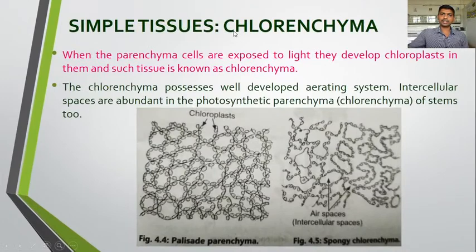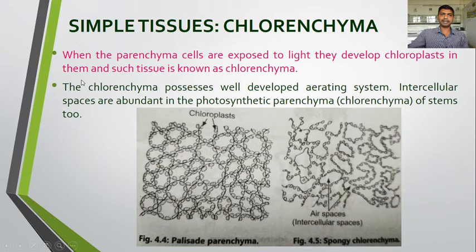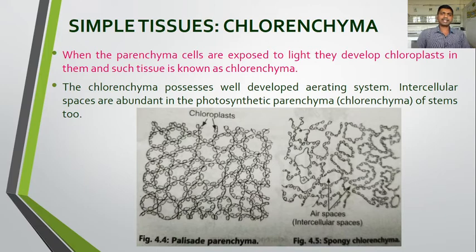The next simple tissue is chlorenchyma. When parenchyma cells are exposed to light, they develop chloroplasts in them — such tissue is known as chlorenchyma. So chlorenchyma is parenchyma made up of thin-walled cells; when exposed to light they develop chloroplasts and perform photosynthesis. Such tissue is known as chlorenchyma.